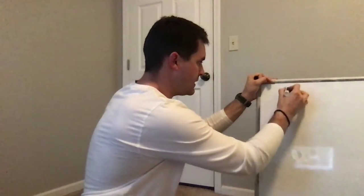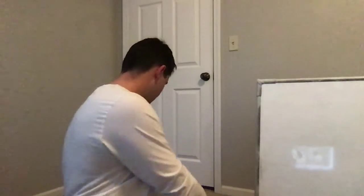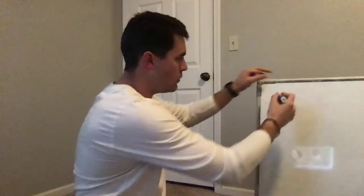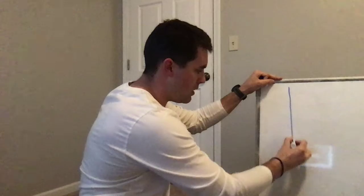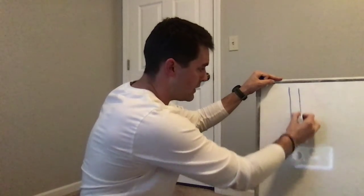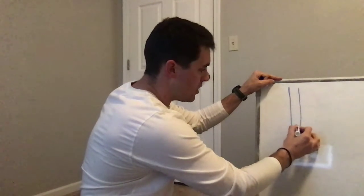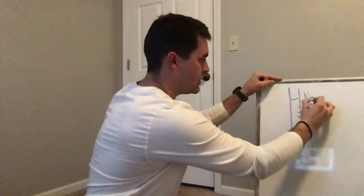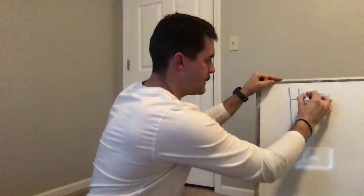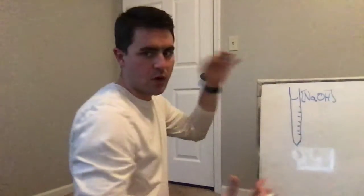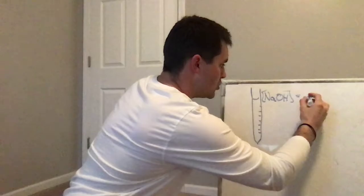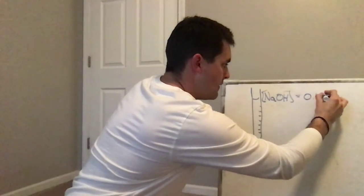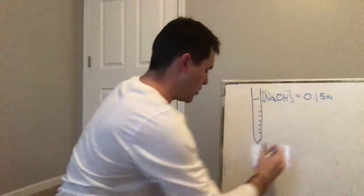We had a known base in this burette, the long skinny tube that kind of came to a point at the end with some markings on it, and we had it filled with a known concentration of sodium hydroxide. That concentration, we put it in square brackets to say concentration, was equal to 0.15 molar.